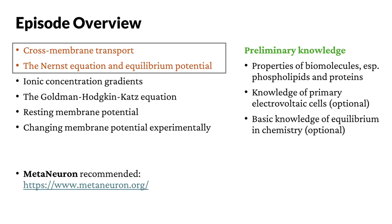First, we're going to talk about cross-membrane transport, especially the different types of transport and different types of proteins utilized in this process. And then we're going to get into some chemistry — we'll deduce the Nernst equation and calculate the equilibrium potential of different ions. In the next episode, we'll dive deeper and examine the multi-ion case. In this episode, we focus on the case for single ions.